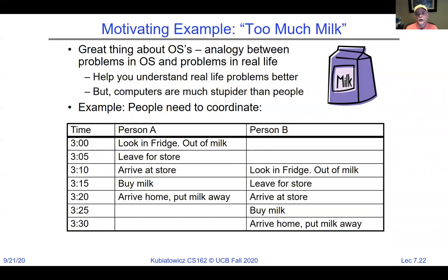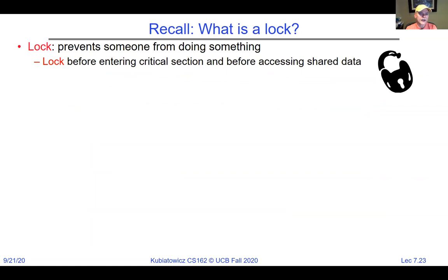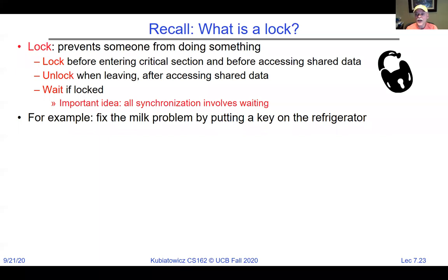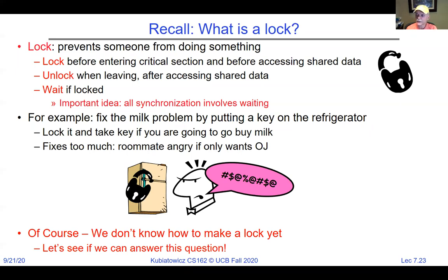A lock is basically preventing somebody from doing something — you lock before entering the critical section, unlock after leaving, and wait if locked. The most important idea behind synchronization is that all synchronization problems are solved by waiting in one form or another. The trick is to wait as little as possible, and if forced to wait longer, don't waste cycles — let somebody else run. For example, fix the milk problem by putting a key on the refrigerator: lock it, take the key, go buy milk.